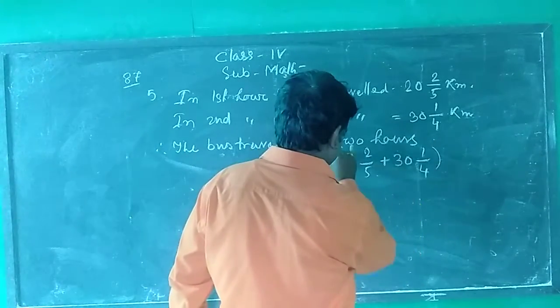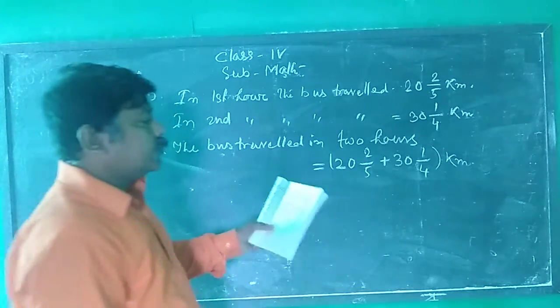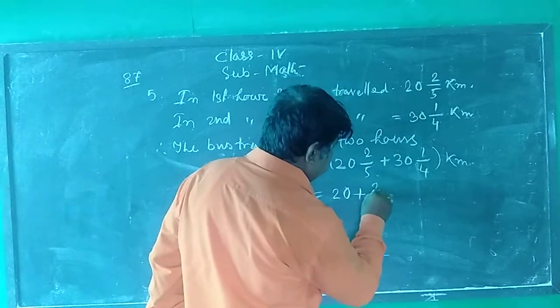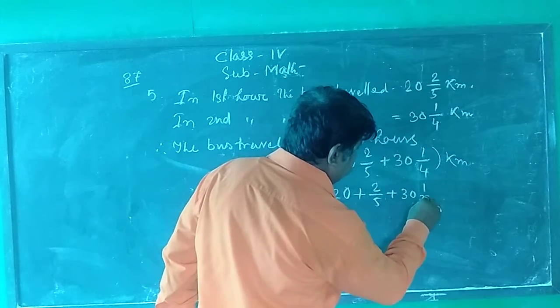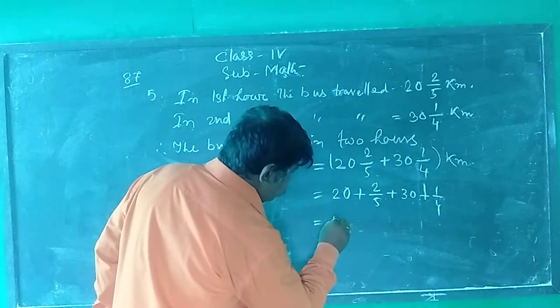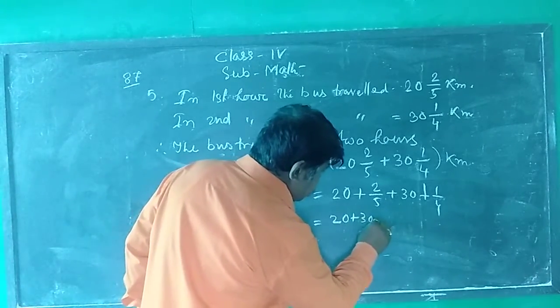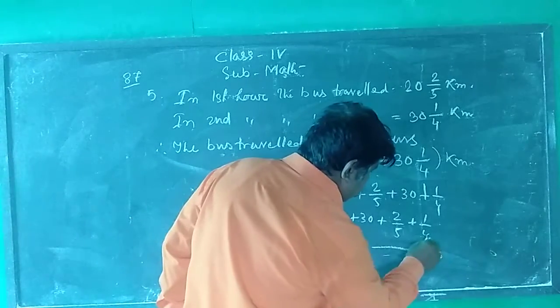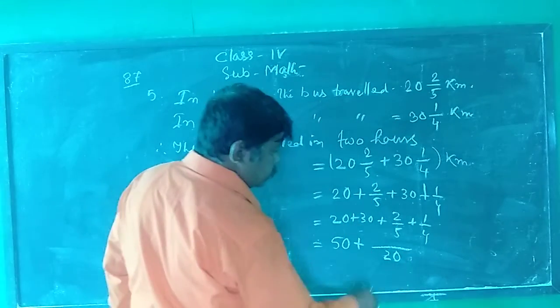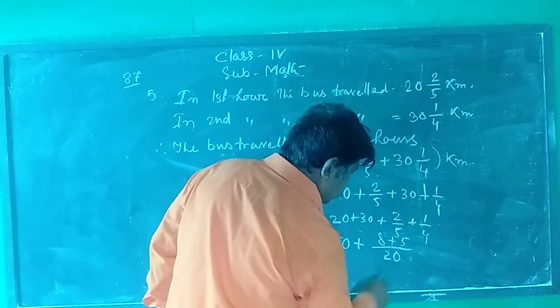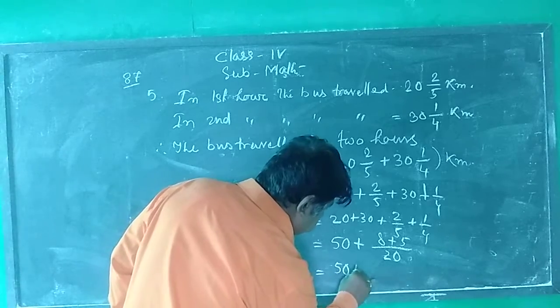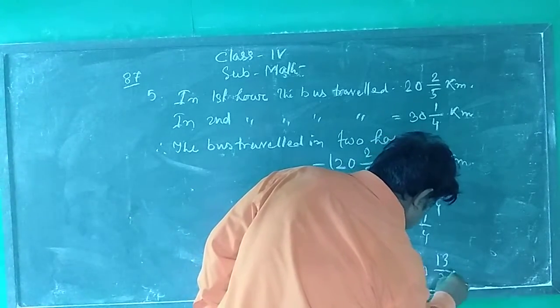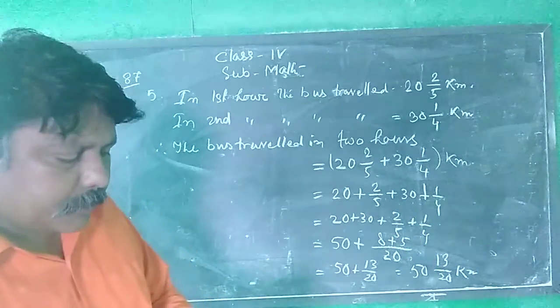We should change into improper fraction. Here we learned in previous class: 20 plus 2 by 5 plus 30 plus 1 by 4 equals to 20 plus 30 plus 2 by 5 plus 1 by 4 equals to 50 plus, then we get LCM, 8 plus 5 equals to 50 plus 13 by 20 equals to 50 whole 13 by 20 kilometers. That is the answer.